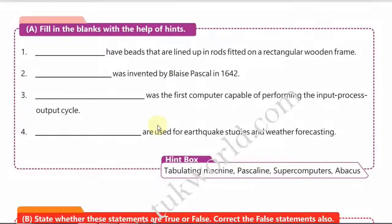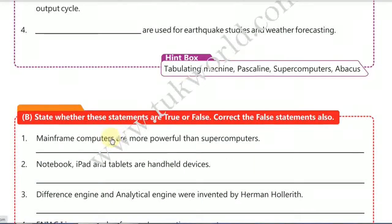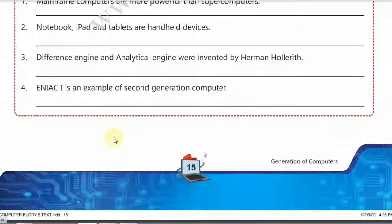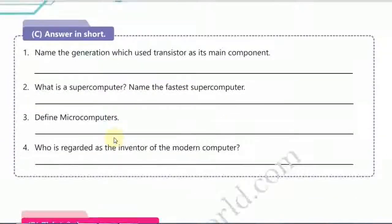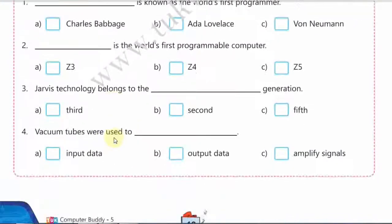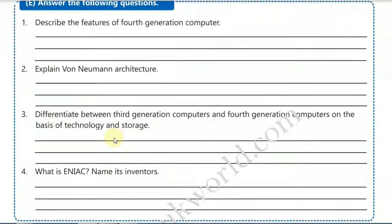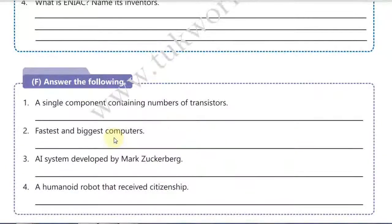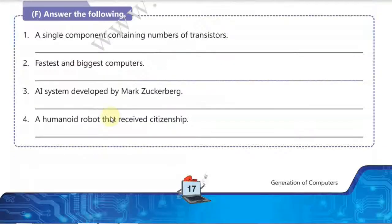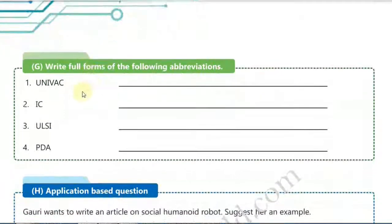The exercises include: fill in the blanks using the hint box where options are given; state whether statements are true or false; answer in short — write the answer in one sentence; choose the single correct answer and tick it; and answer the following questions in two to three sentences.